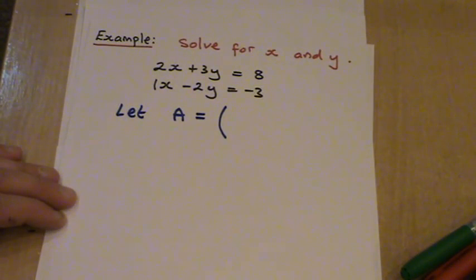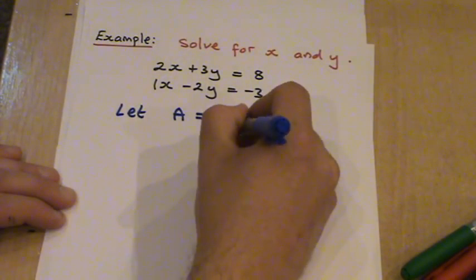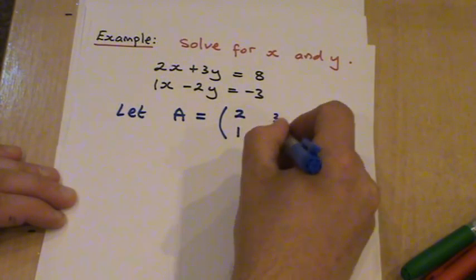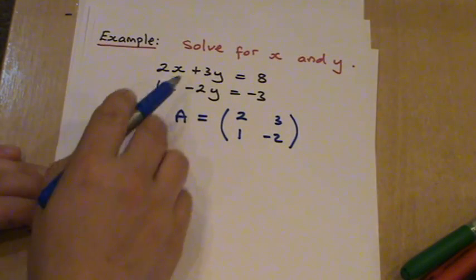So here we can let matrix A equals, so just using the coefficients of the x and the y, we're going to get a 2 and a 1, and a 3, and a minus 2.